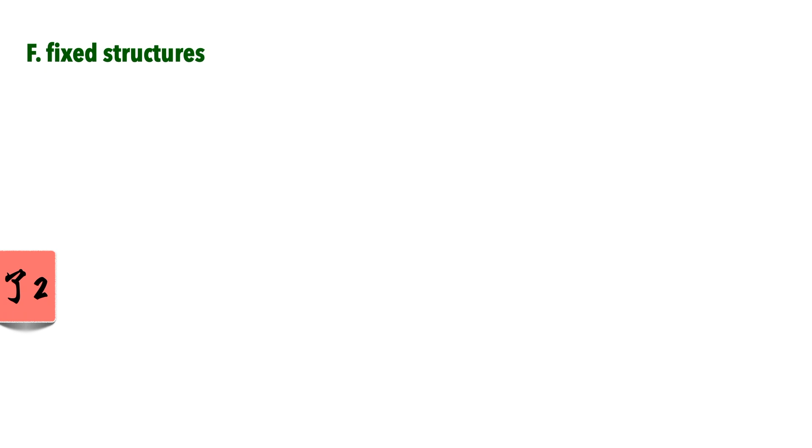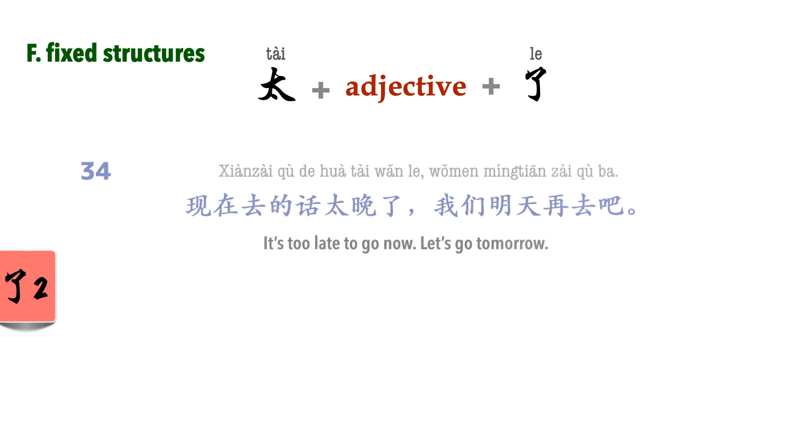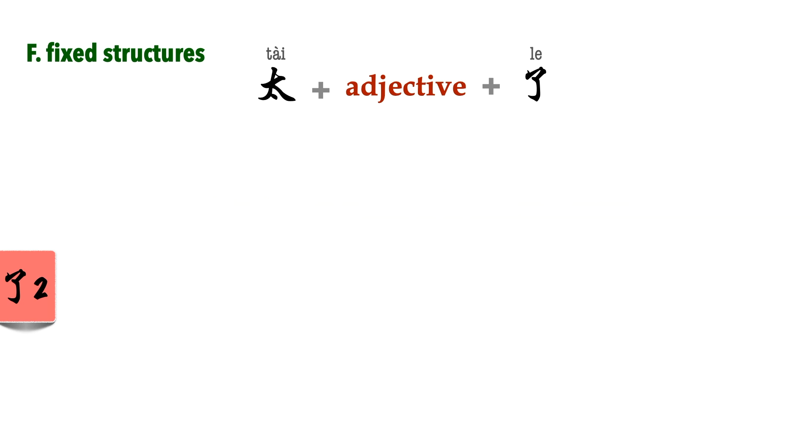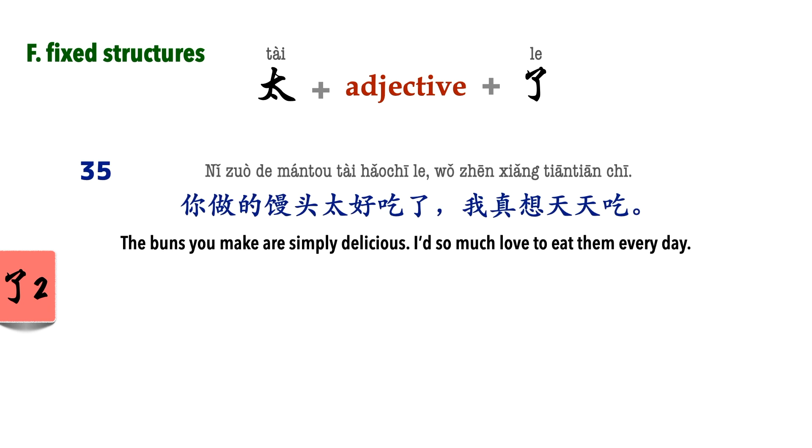Fixed constructions. And then there are fixed structures with 了 too, which are a lot easier since they're set forms. Here are a few most common structures. 太 something 了. Although the direct translation is too something, it can be translated several ways, including very, so, awfully, and so on. Note that this can be used for both positive and negative contexts. 现在去的话太晚了,我们明天再去吧. 你做的馒头太好吃了,我真想天天吃.